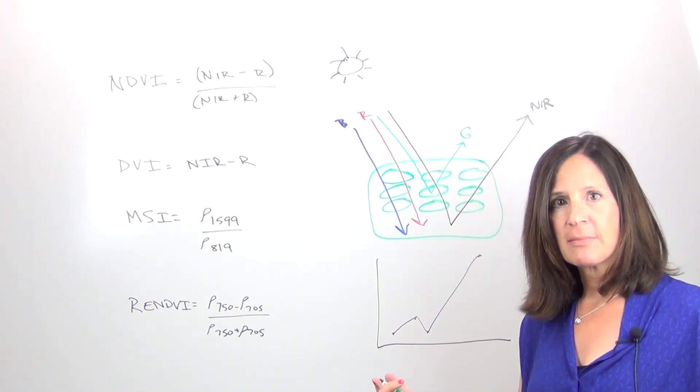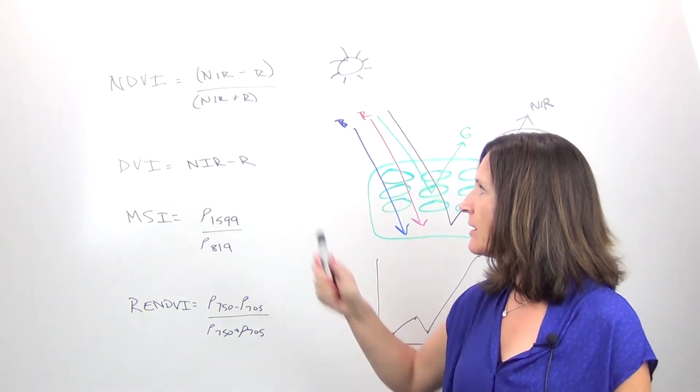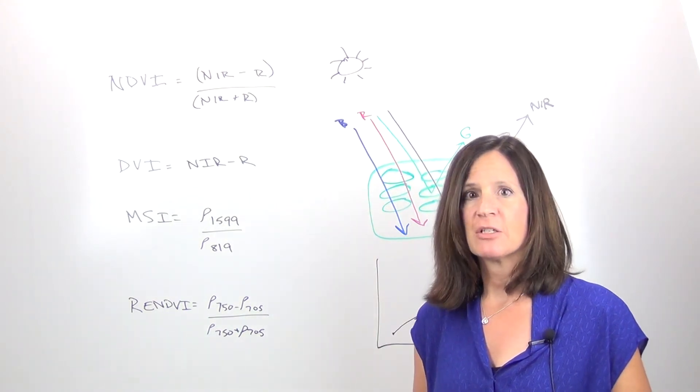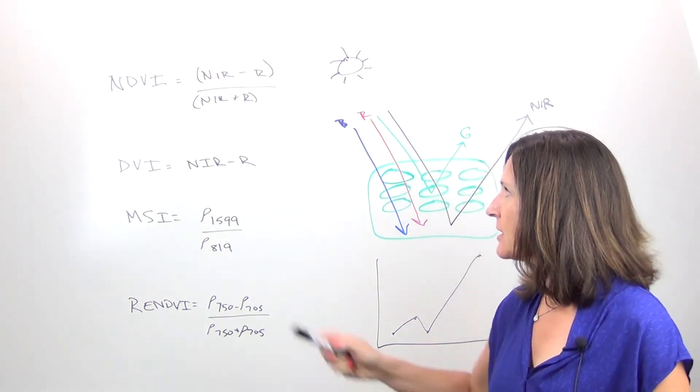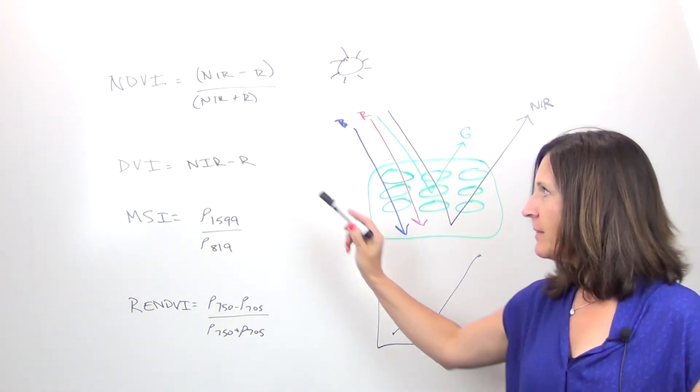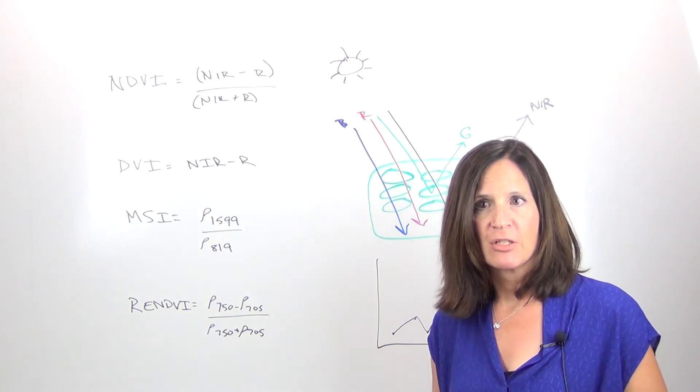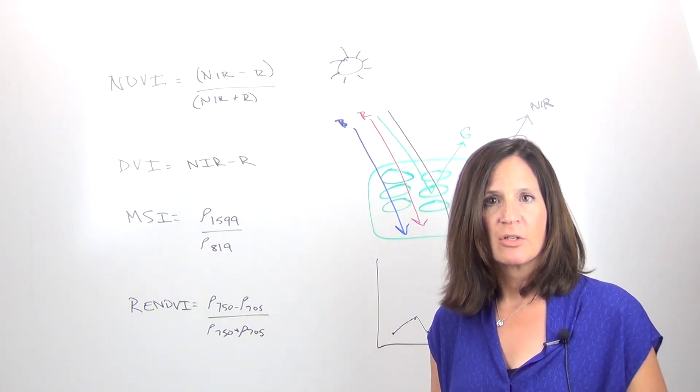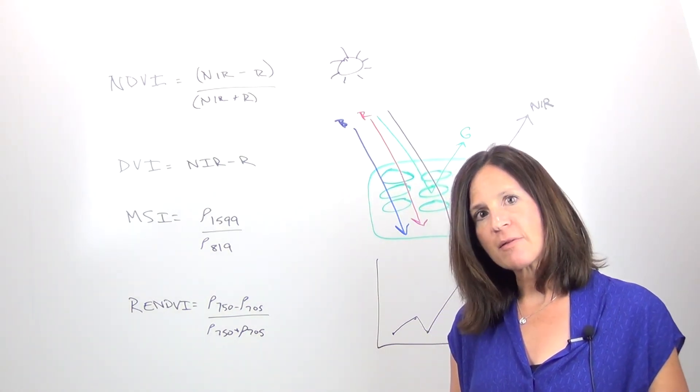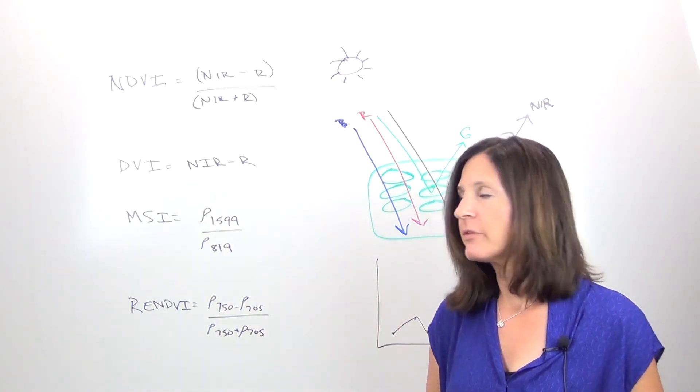So in my blog this week I'm going to show some of these different things, including the DVI, the difference vegetation index, which really just takes the near infrared minus the red. And this index is really useful when you want to separate the soil from the vegetation. So if you're working in precision agriculture and you want to see what percentage of your plot is actually planted, this might be a good index to use.